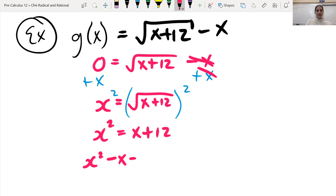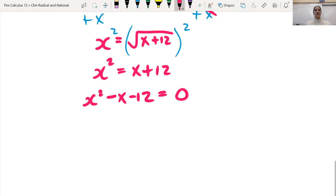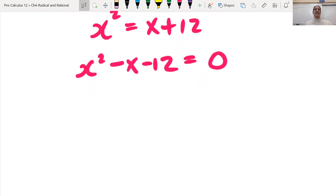x squared minus x minus 12 equals 0. So I know that I have a quadratic equation here. I have x squared minus x minus 12, so I can't just isolate the x. I'm going to have to factor this in order to figure out what's going on here.